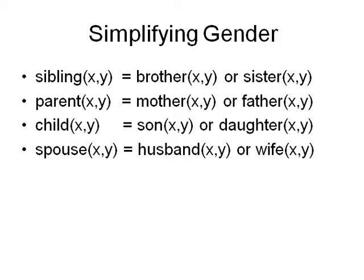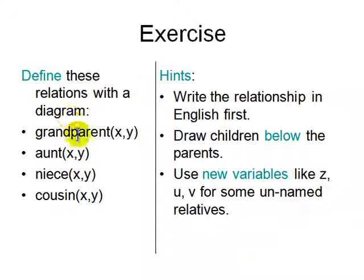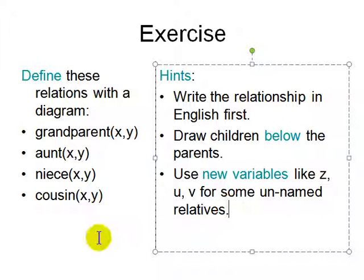So let's look at some exercises. How do you define grandparent? How do you define aunt, niece, cousin? So how to solve this problem? First, write it in English. If you can't write it in English, you can't do it mathematically. Draw the children below the parents, and if there are extra variables, unknown variables, you would introduce more variables like z, u, v, and unnamed relatives into the relationship.